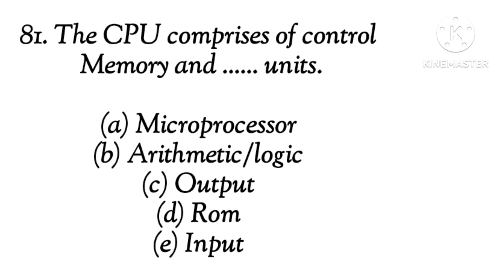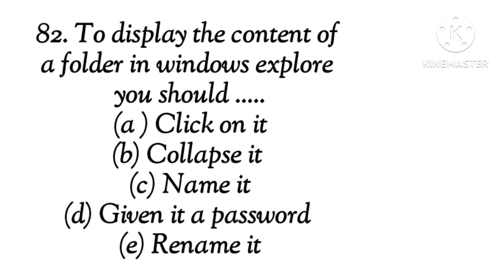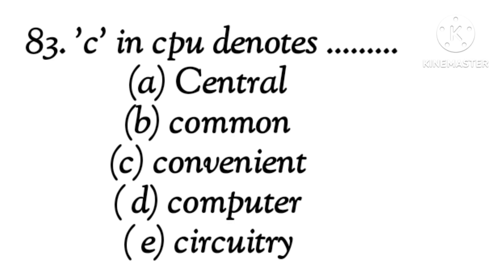Question 82: To display the contents of a folder in Windows, you should dash. The right answer is B, A, click on it. Question 83: In CPU, C is denoted as dash. The right answer is A, central.